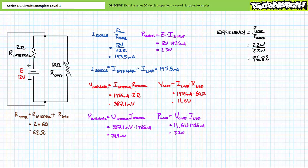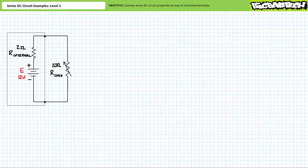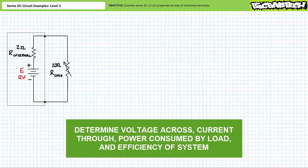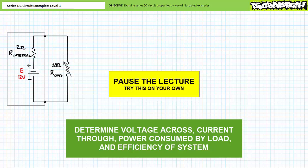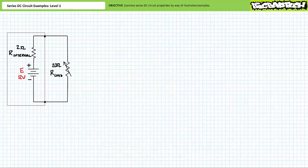Our next illustrated example problem is a variation of the previous one. This problem features a 12 volt battery with 2 ohms of internal resistance, only this time the electrical load has been reduced to 20 ohms. Let's see how this reduction of load resistance affects the efficiency of this system. By all means pause the lecture and try this on your own. If you're tracking, you should observe the following results. We could repeat the previous analysis techniques; however, let's go about this in a different way.